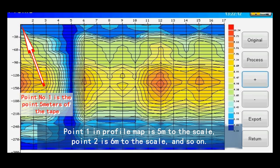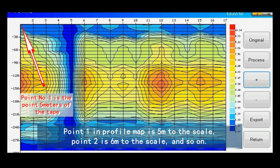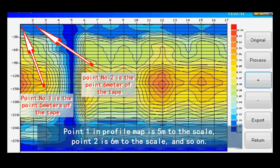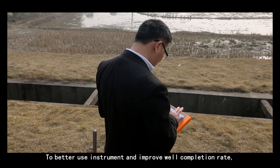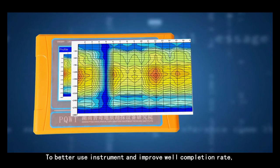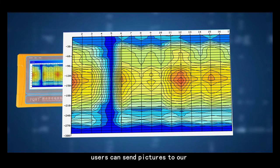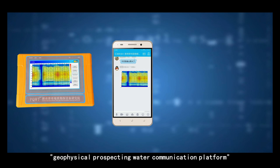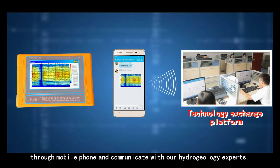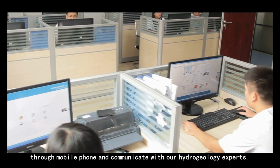Point one in profile map is 5 meter to the scale. Point two is 6 meters to the scale and so on. To better use instrument and improve well completion rate, users can send pictures to our geophysical prospecting water communication platform through a mobile phone and communicate with our hydrogeology experts.